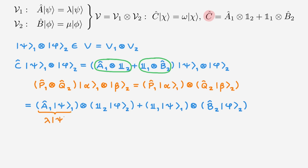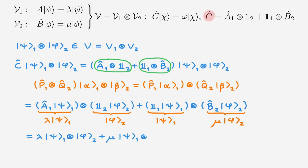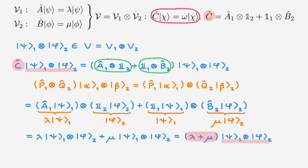This is the eigenvalue equation in V1, and the identity operator here does not change the state. The same goes for this identity operator, and this is the eigenvalue equation in V2. Overall, we end up with lambda times the tensor product state plus mu times the tensor product state. We see that the action of C on this state gives a scalar times the same state, which means that the tensor product state is an eigenstate of C. Looking at the eigenvalue equation of C, this means we can write the eigenstate chi as this tensor product state. We also see that the eigenvalue associated with chi is lambda plus mu, so we can write the eigenvalue omega of C as equal to lambda plus mu.